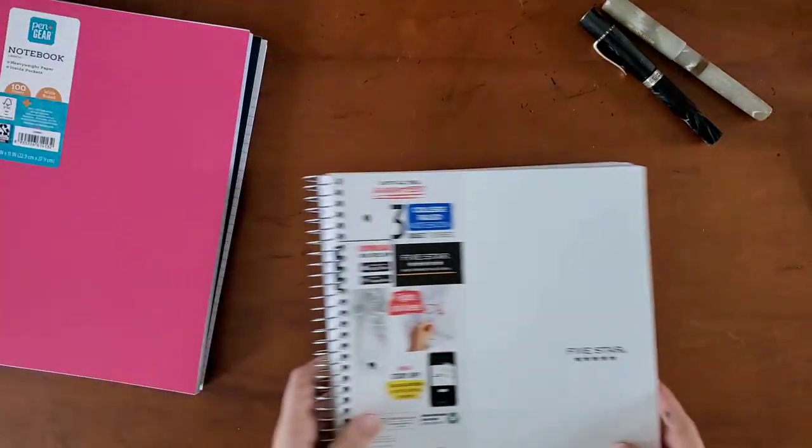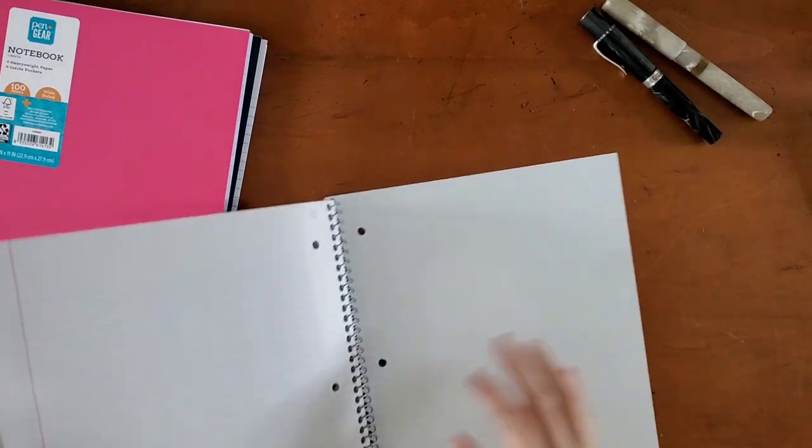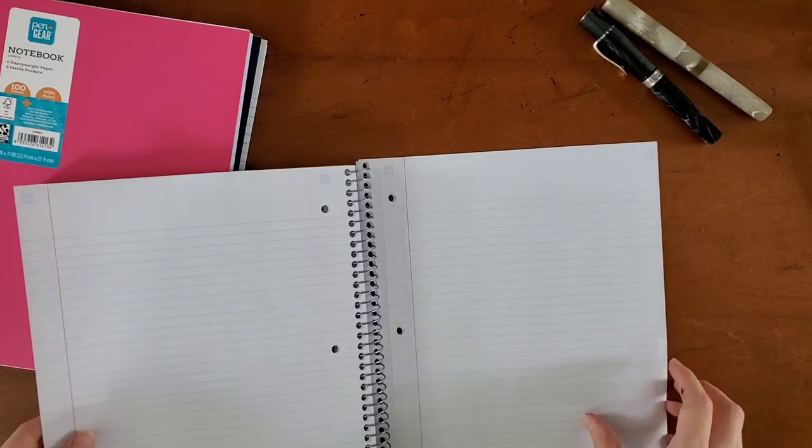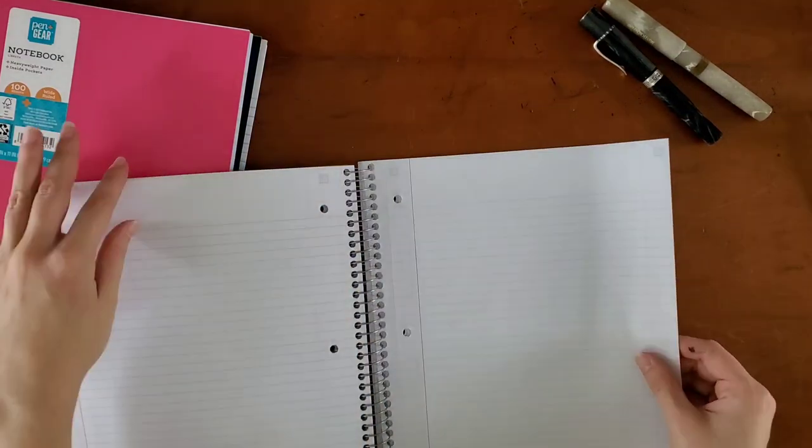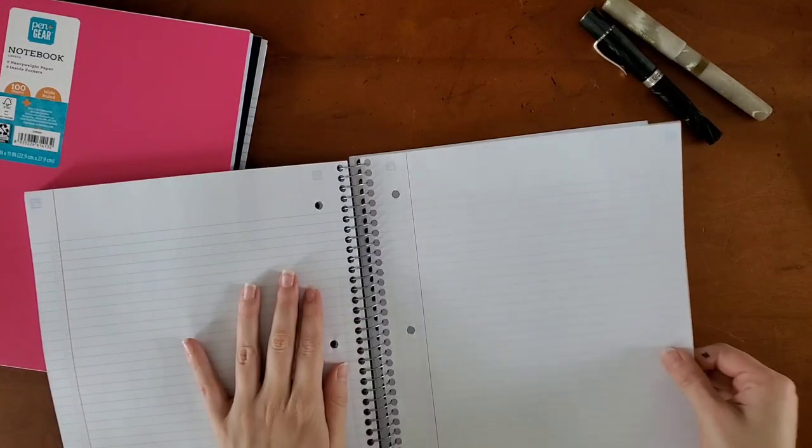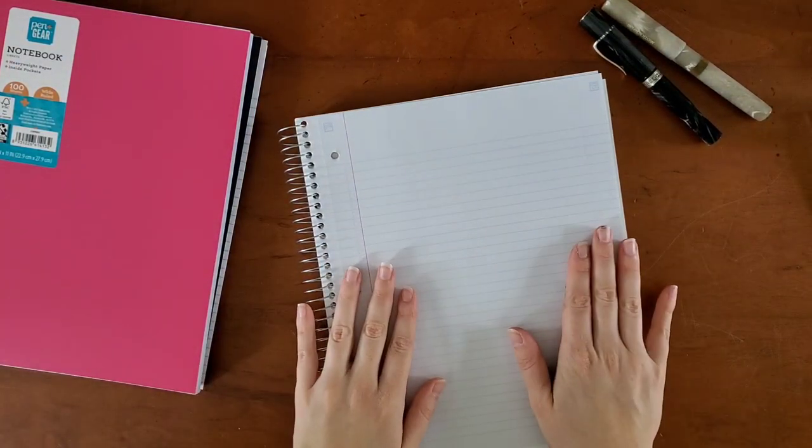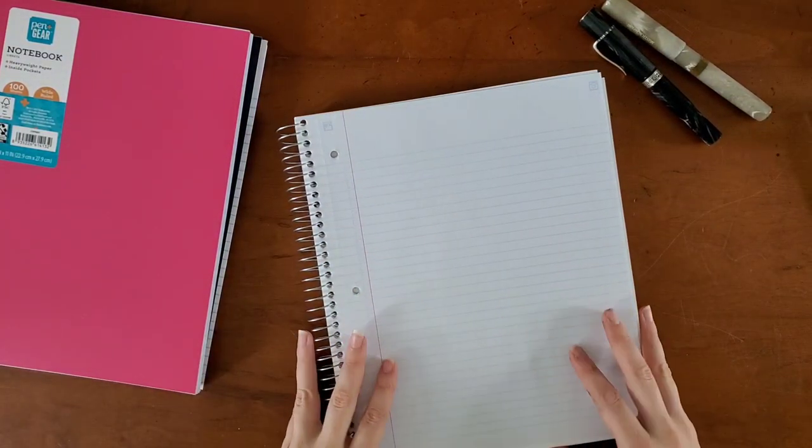I'm going to move on to the more fancy writing paper, which, let's face it, it's not really that fancy. But I'm going to go a couple of sheets from the back so that if it does present any bleed through, I'll be able to see it. This is the Mead Five Star Notebook.